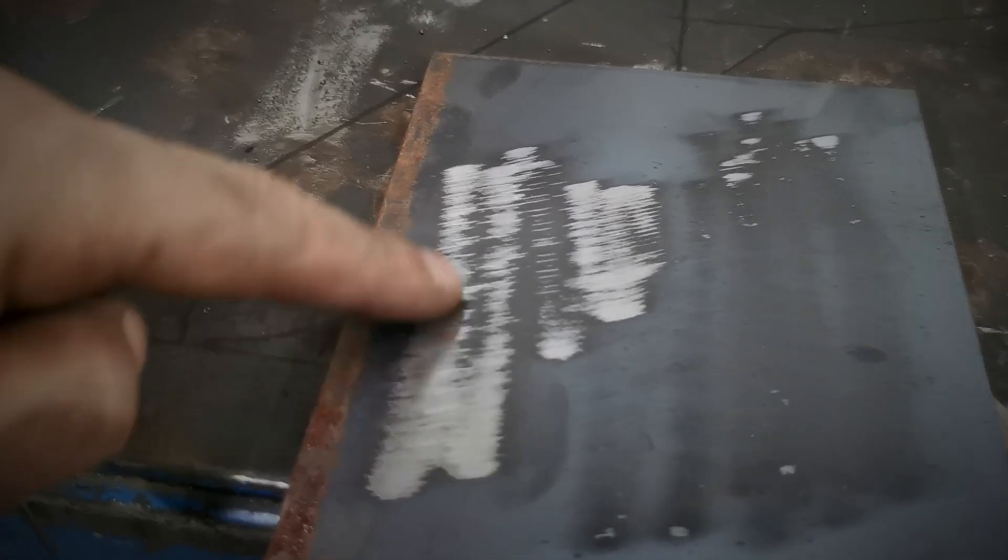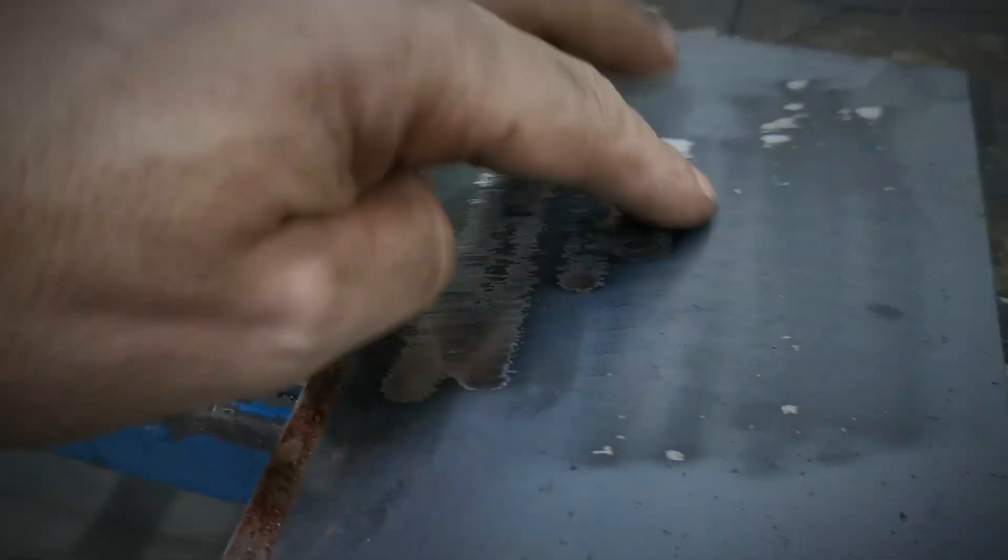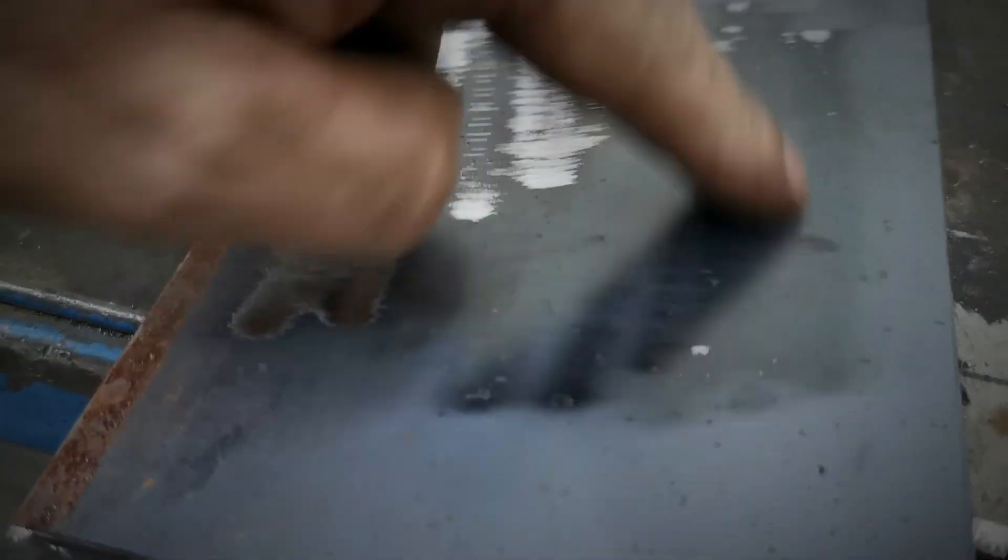You can see there the problem with grinding it. You'll get some of it will come off—it's just like a really hard scale—and then you can see where it's really stuck down onto the steel. All you get is a polished surface, which isn't any good if you want to do some fabrication and clean it up.